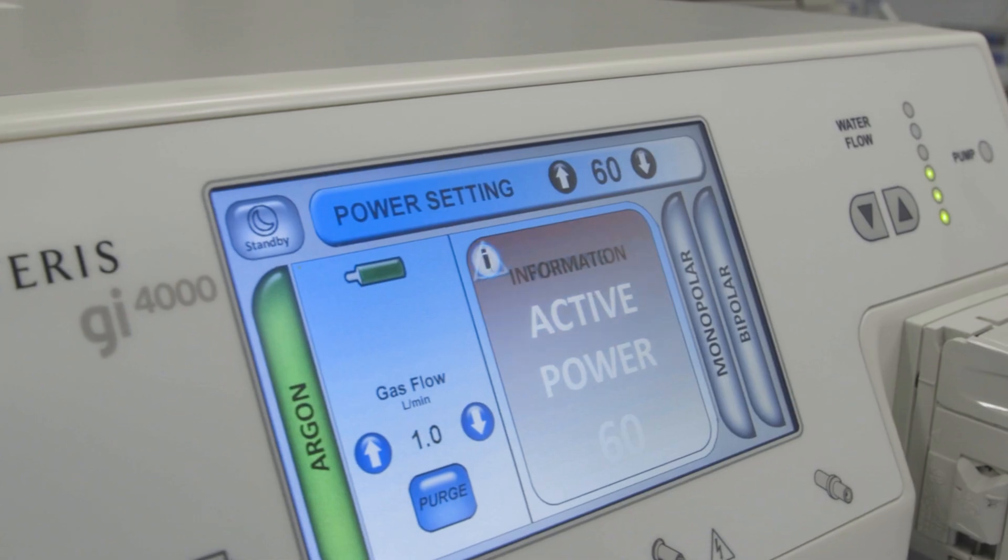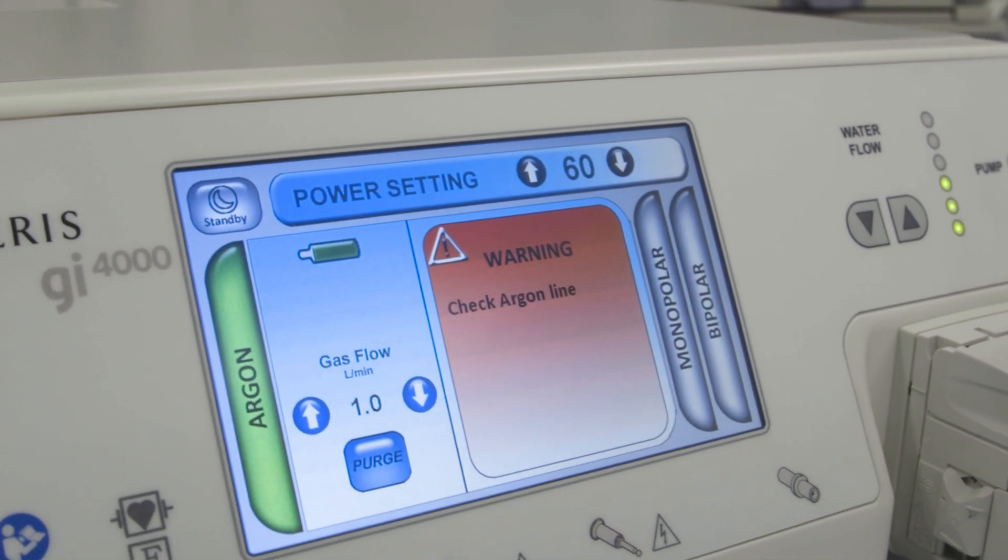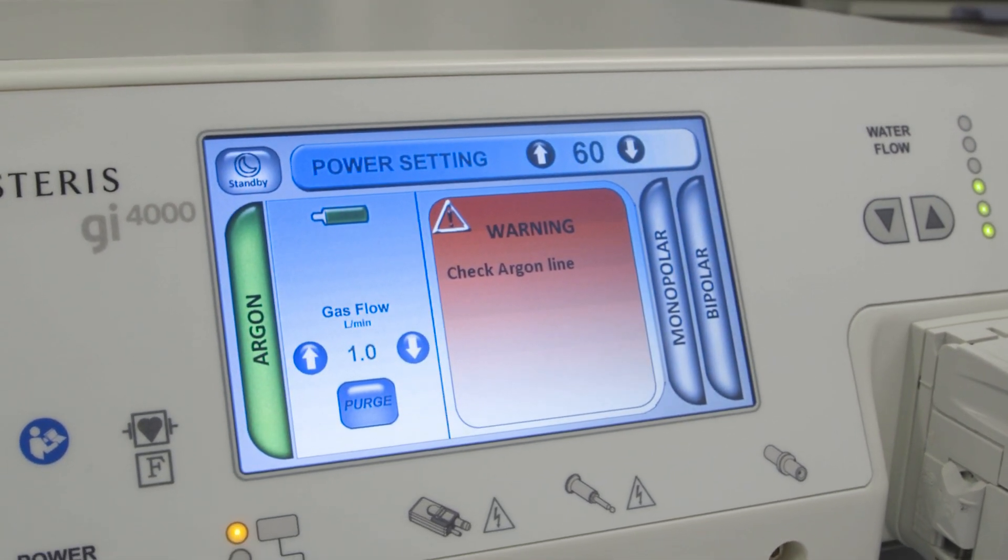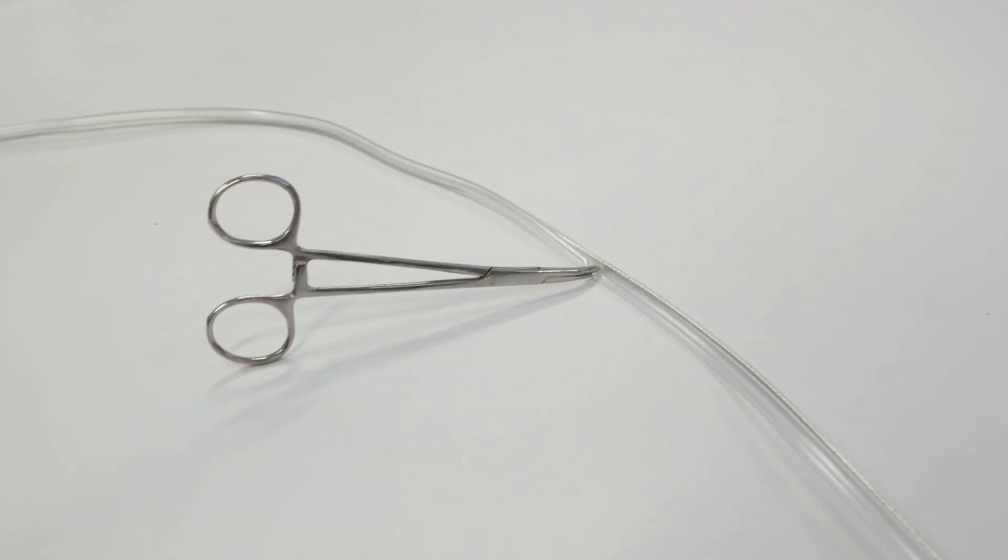Warning, check argon line. The check argon line warning can appear if the argon gas delivery line is occluded, pinched, or clogged.